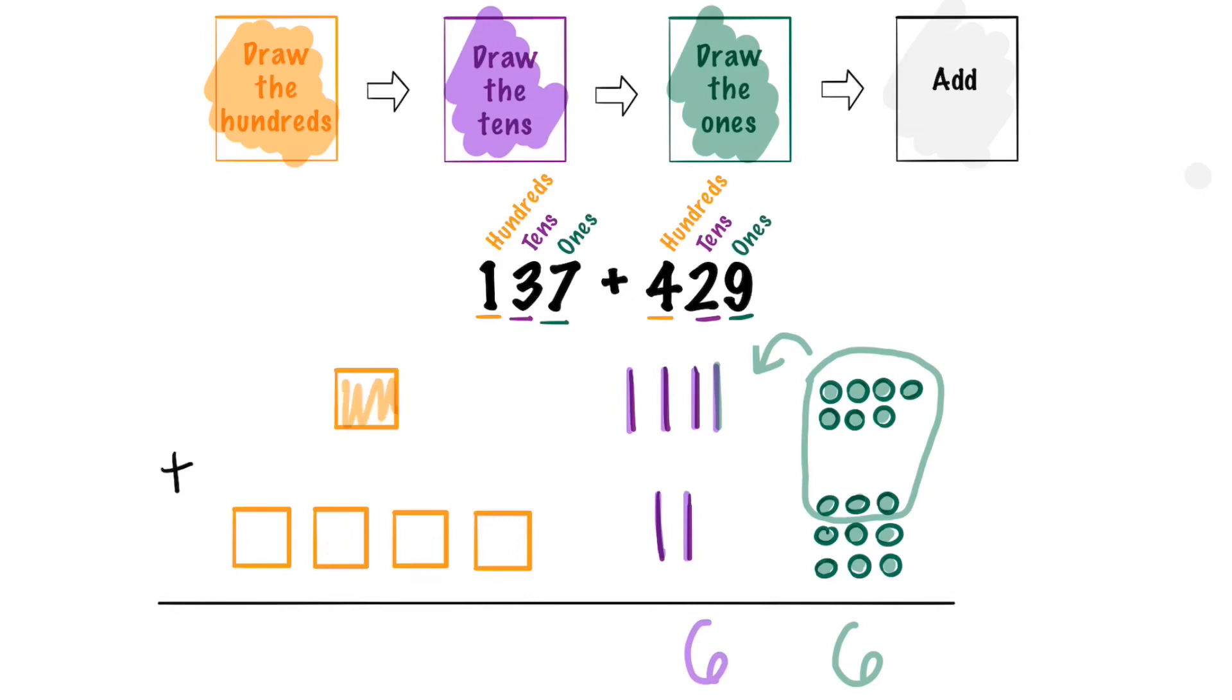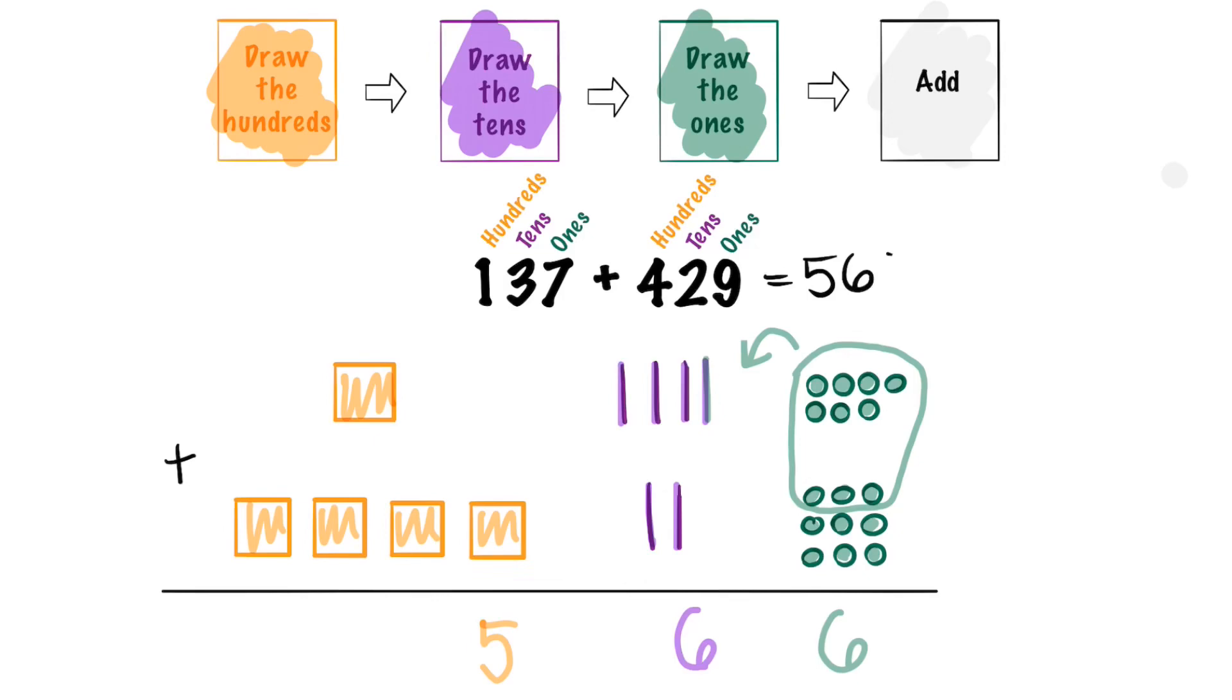Let's add up our hundreds. 1, 2, 3, 4, 5. We have 500. The sum for this problem is 566.